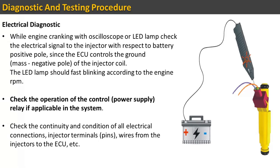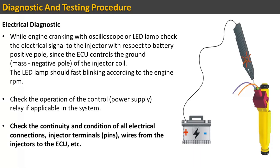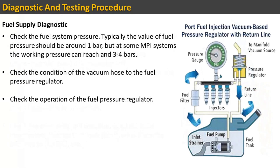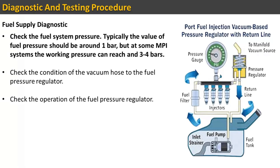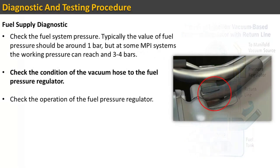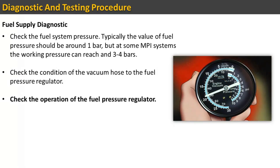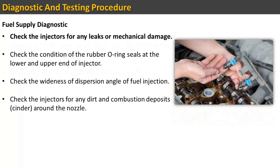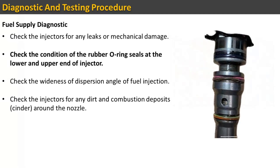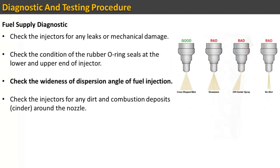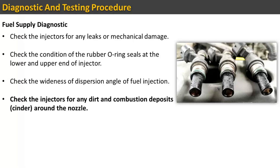Check the continuity and condition of all electrical connections including injector terminals and wires from the injectors to the ECU. Fuel supply diagnostics: Check the fuel system pressure — typically the value should be around 1 bar, but in some MPI systems the working pressure can reach 3 to 4 bars. Check the condition of the vacuum hose to the fuel pressure regulator and check the operation of the fuel pressure regulator. Check the injectors for any leaks or mechanical damage, the condition of the rubber O-ring seals at the lower and upper end of the injector, the dispersion angle of fuel injection, and any dirt and combustion deposits around the nozzle.